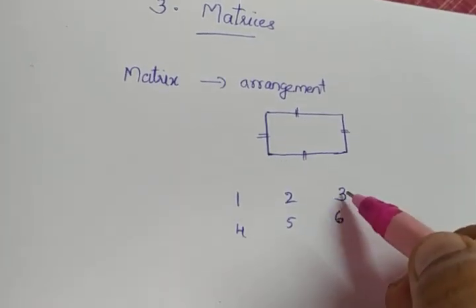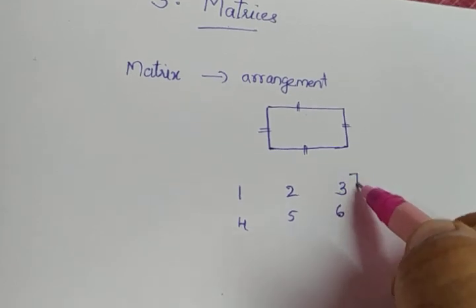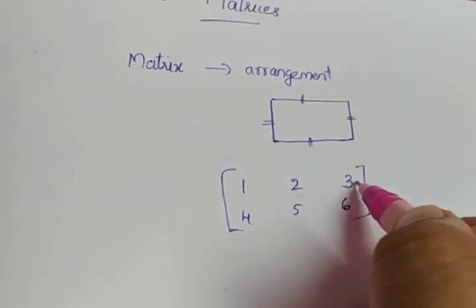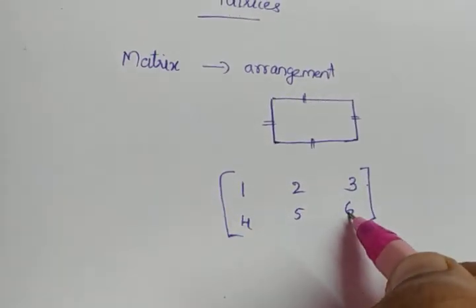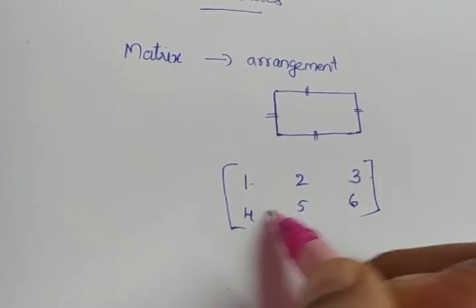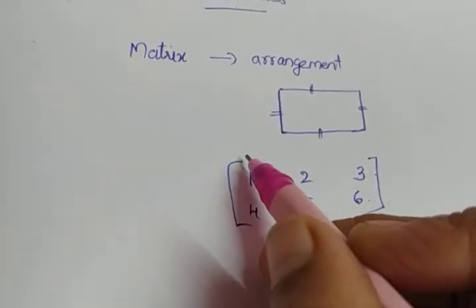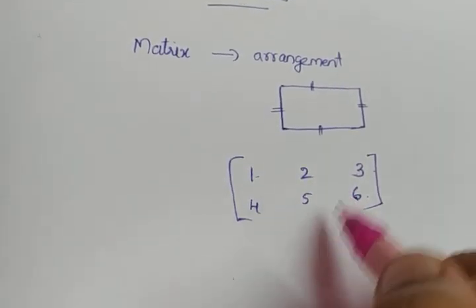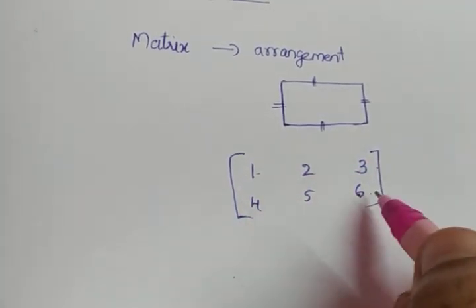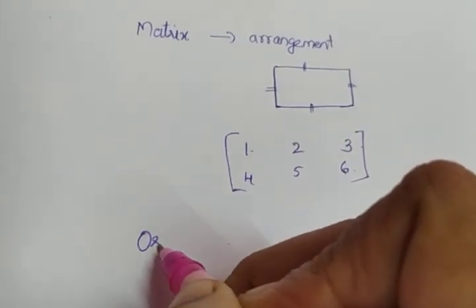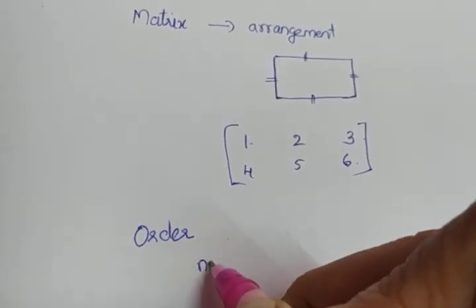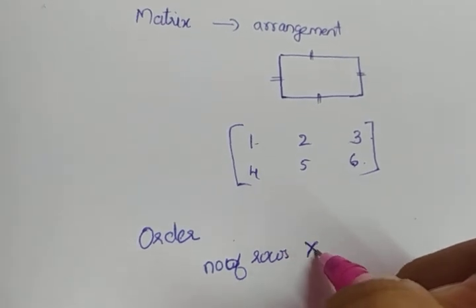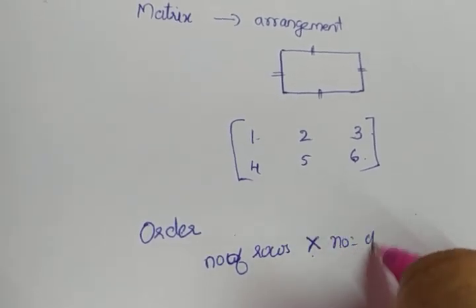A matrix is represented in square brackets. How many rows are there? This is the first row — 1, 2, 3 — and the second row — 4, 5, 6. So there are two rows. Horizontal arrangements are called rows and vertical arrangements are called columns. There are three columns. The order of a matrix is the number of rows by number of columns.